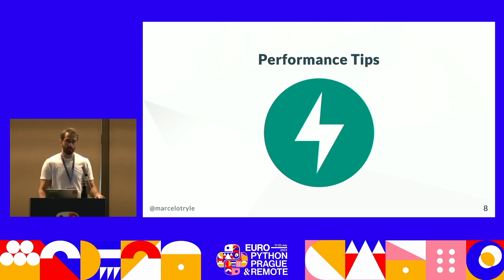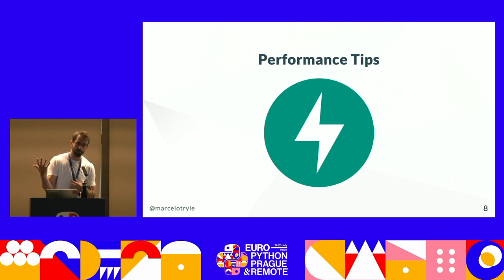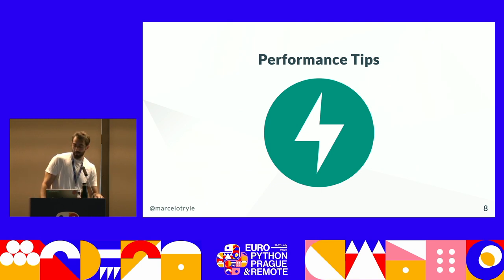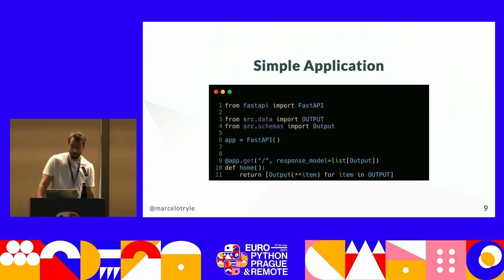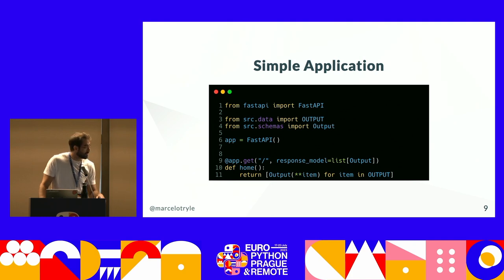So we'll be talking about performance tips — small things you can do to improve performance. The base application I'll use has, on lines three and four, generated schemas and some data. On lines nine to eleven, I have an endpoint where I'm purposely creating some Pydantic models and returning that to the client.